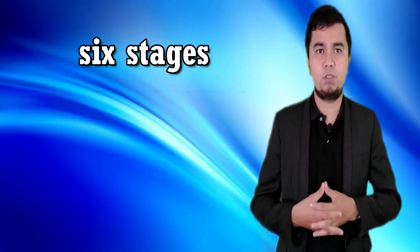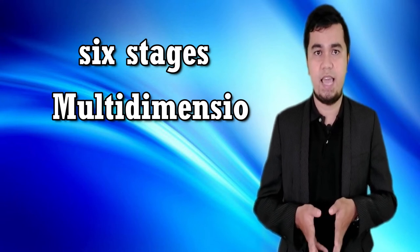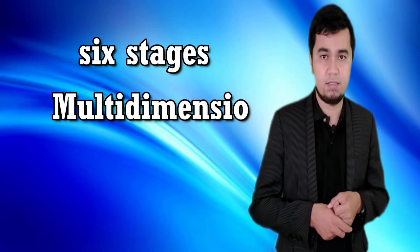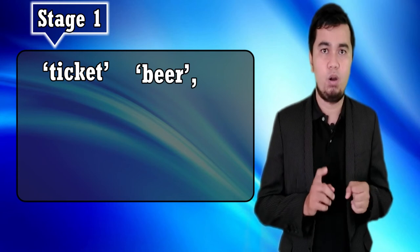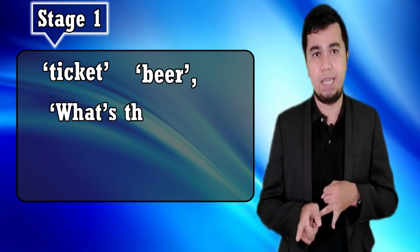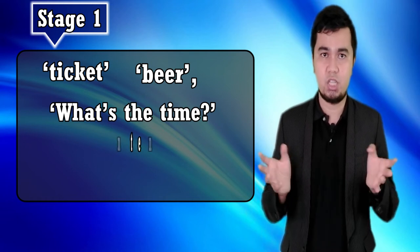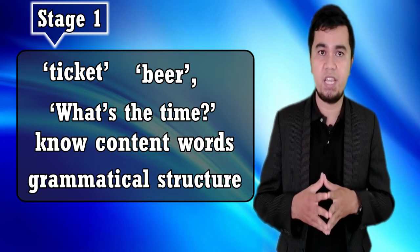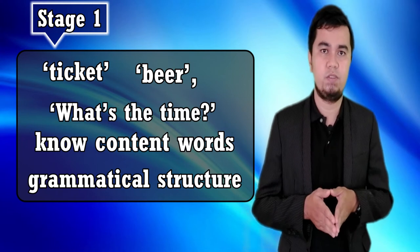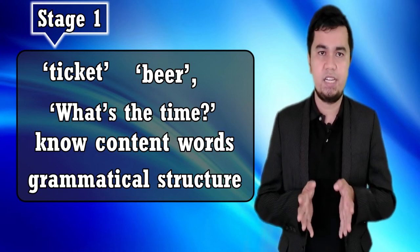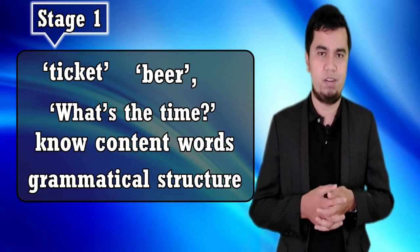There are six stages of the multi-dimensional model: first, learning to deal with words; next, with phrases; then with simple sentences; finally, subordinate clauses in complex sentences. The first stage is that learners can produce only one word at a time — for example, 'ticket,' 'beer,' or formulas like 'what's the time?' At this stage learners know content words but have no idea of grammatical structure — words come out in a stream, as if they had a dictionary in their mind but no grammar.